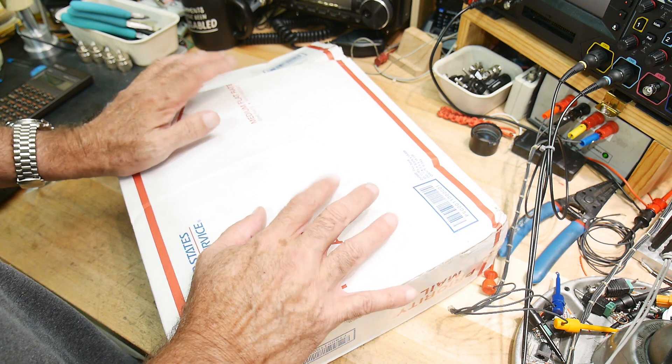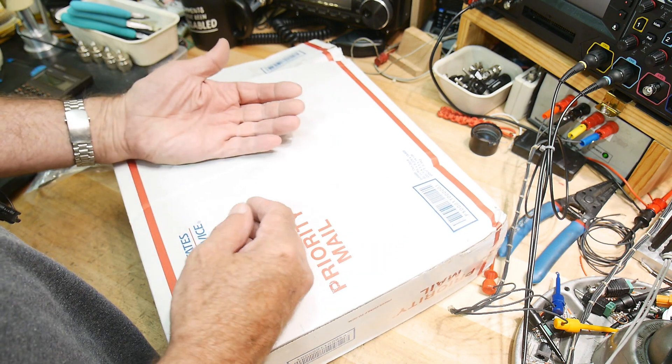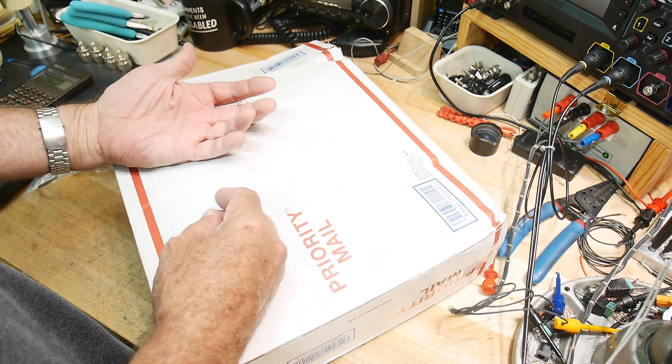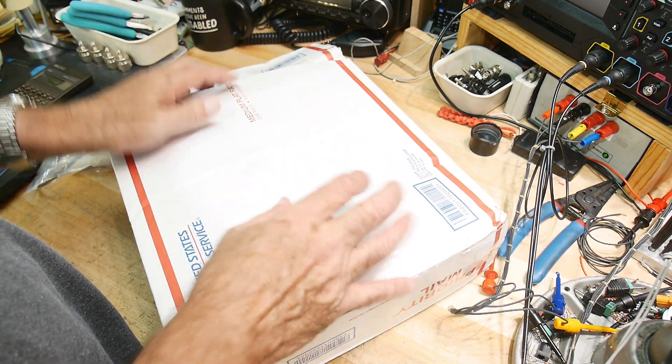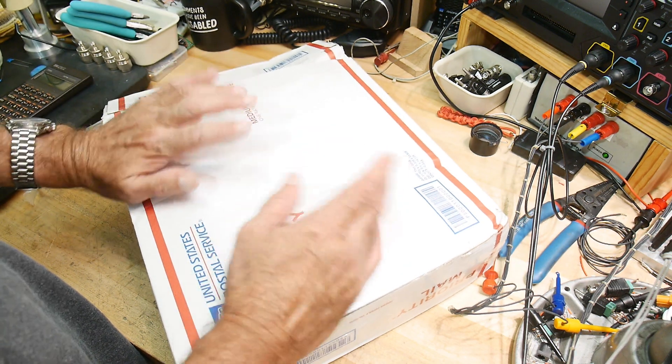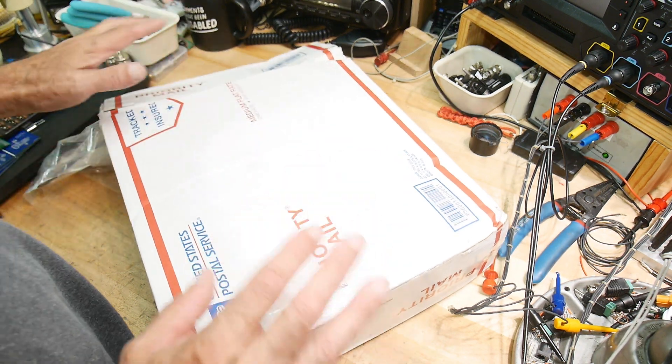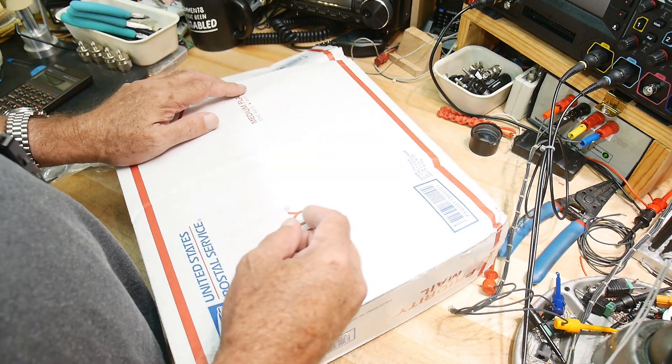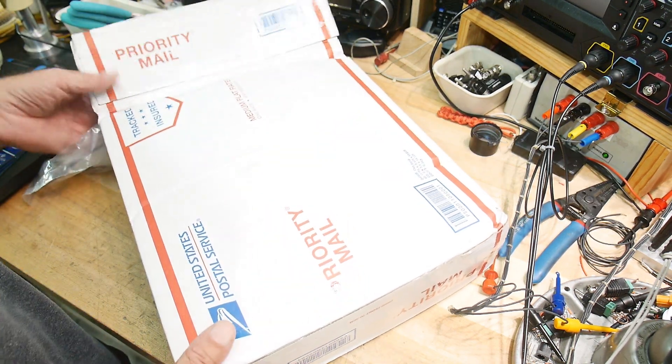And so I basically said I'm interested in certain categories. I was looking for things that I can use on the channel to help you guys out. So some things maybe I don't have or some things that I can tear down, things like that. So he went through my list and this is what he sent me. So I really have no idea what's in here.